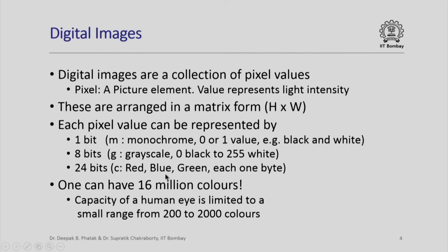For each one byte you can actually represent a pixel component, so one pixel gets represented by 3 bytes or 24 bits. Please note that one can have 16 million colors if you look at all the possible combinations that can be represented. Of course, the capacity of a human eye is limited — we can actually detect somewhere between 200 to 2000 colors.